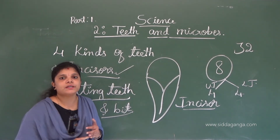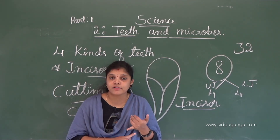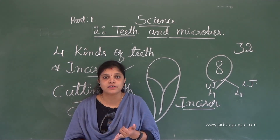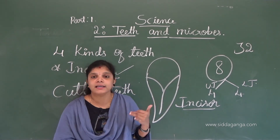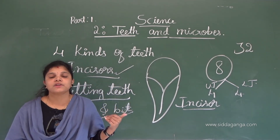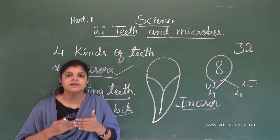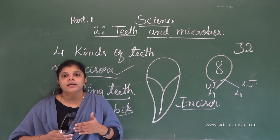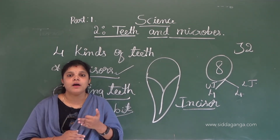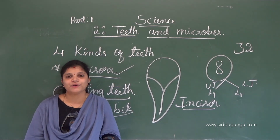Today we studied about: functions of teeth, sets of teeth, and kinds of teeth. In the kinds of teeth, we started to discuss about incisors — their function and how many there are. In the next class, we will discuss canines, premolars, and molars. Thank you, my dear students.